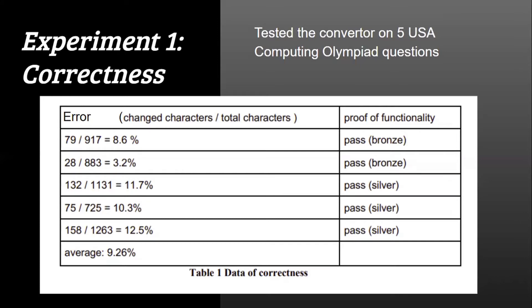After finishing our algorithm, we did two experiments to test its correctness. For the first experiment, the converter takes in Python code and converts it line-by-line to Java code. To determine the correctness of the translated code, we used Python code from the United States of America Computing Olympiad (USACO) problems. The USACO is a competition consisting of coding problems of different difficulties. We selected five problems — two bronze-level and two silver-level — then took the Python solutions for each that successfully passed the test cases, and put the five Python source files into the converter one-by-one to generate five corresponding Java translations.